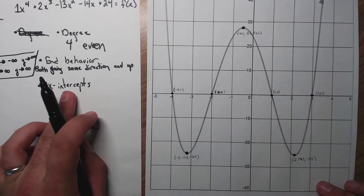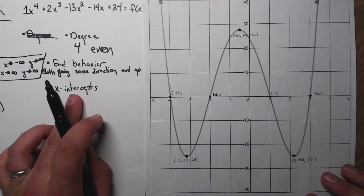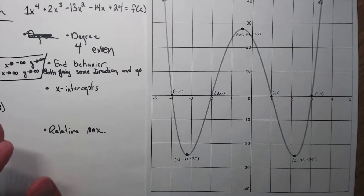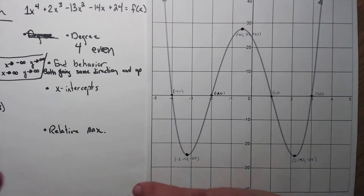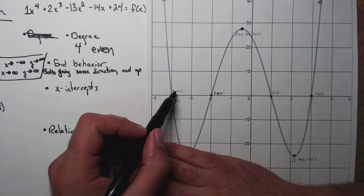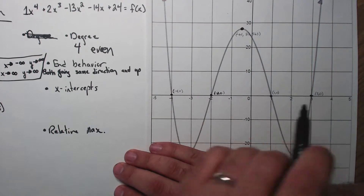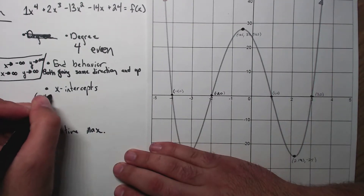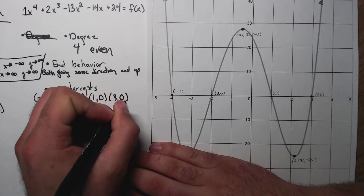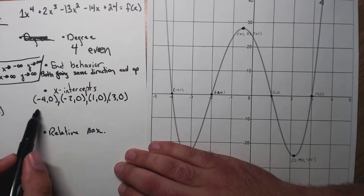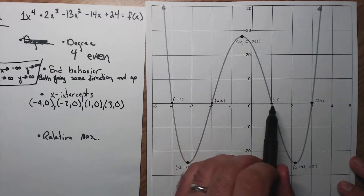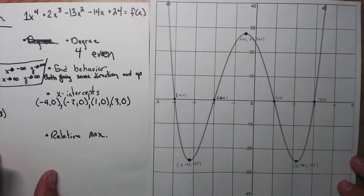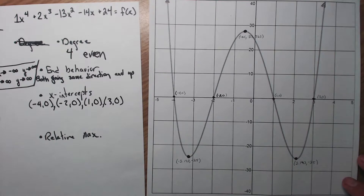X-intercepts — not bad, we've done these kinds of things before. We have four of them: (−4, 0), (−2, 0), (1, 0), and (3, 0). We would also call those roots or zeros.